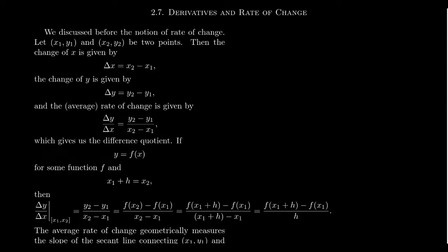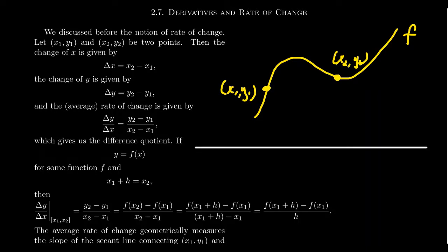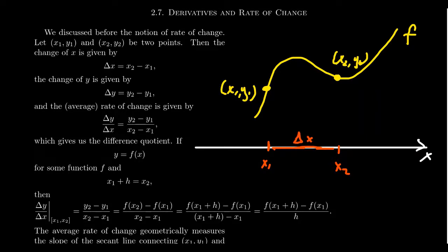Imagine that we have two points, x1, y1 and x2, y2, and imagine these are points on some function f. If we measure how far apart these two points are just along the horizontal — so think of the x-axis as being somewhere below — we measure the horizontal change. The distance between x1 and x2 is x2 minus x1, which we call delta x. That triangle symbol is the Greek letter delta, used as a mnemonic device — delta, d, for difference.